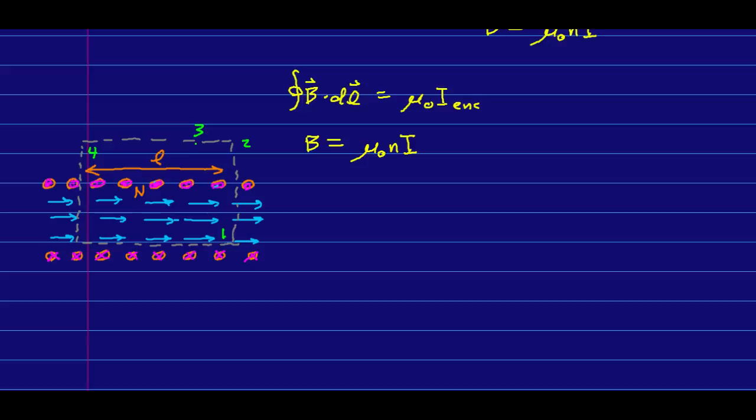Now, of course, that's only an approximation. For a real solenoid, though, if it's long enough, then far away from the ends, the field is very approximately uniform inside, and the field inside is much, much stronger than the field outside.